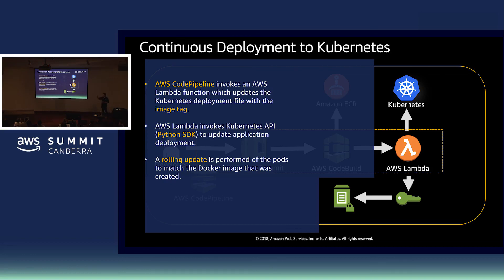In the example here, you can also see a call-out to parameter store. What Lambda is doing is pulling out the secret material from parameter store, which it uses to authenticate itself against the Kubernetes API using client certificate-based authentication. If you were using the EKS service or the IAM Authenticator for AWS, the Kubernetes client libraries support the ability to call through the IAM Authenticator for Kubernetes and make calls directly to the EKS service via that mechanism.